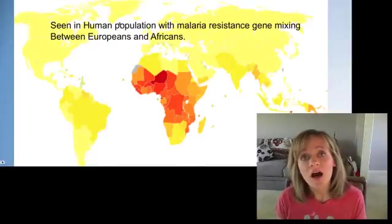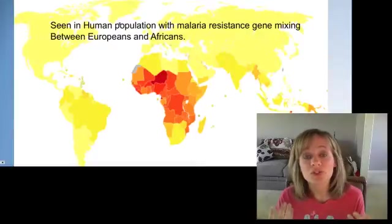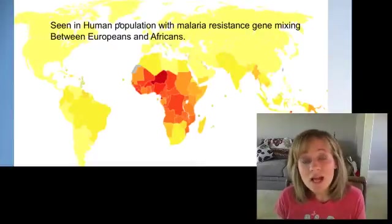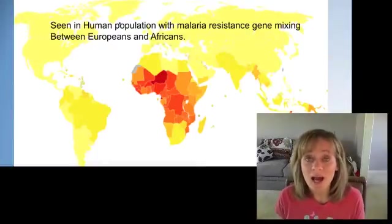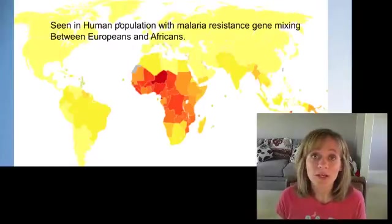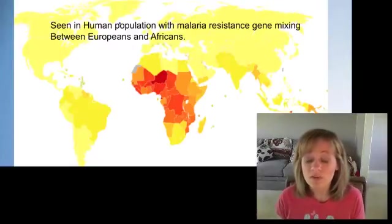As these people left Africa and started to mix with those of European or American descent, those genes mixed. And so we start to see evolution of a population due to gene flow. And that's not natural selection. That's not adaptive. That's just totally due to random chance that people are entering or leaving a population.